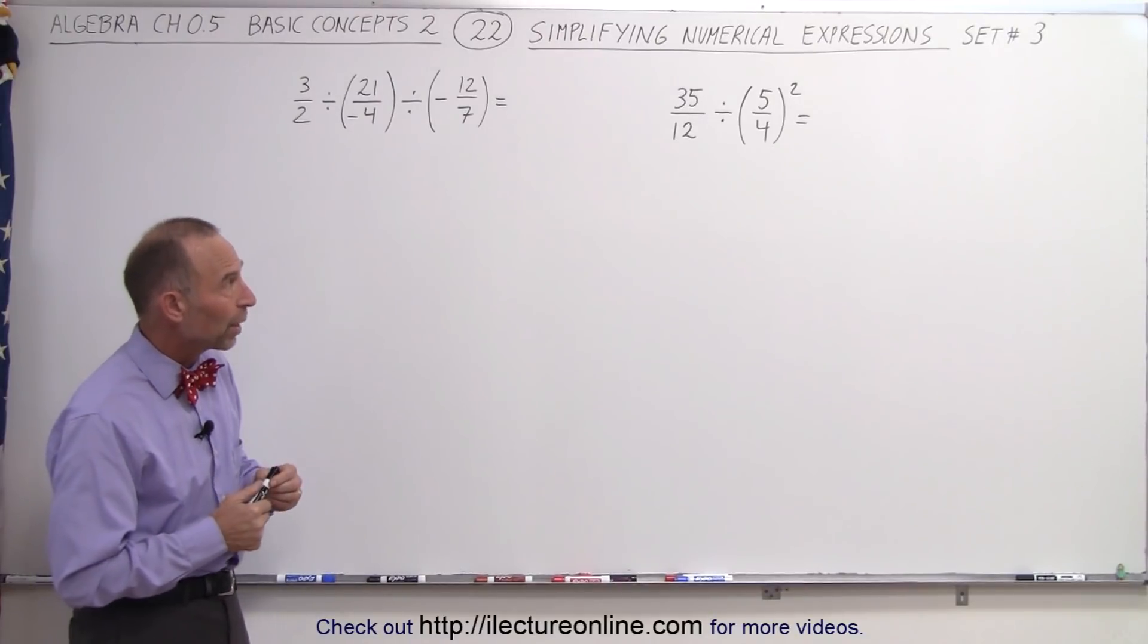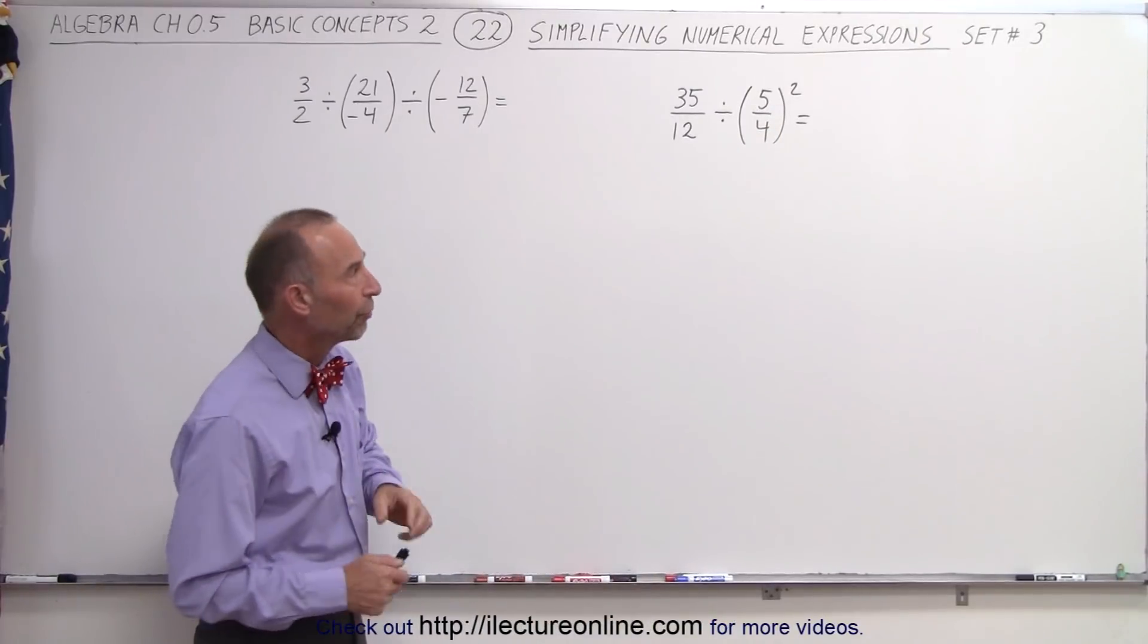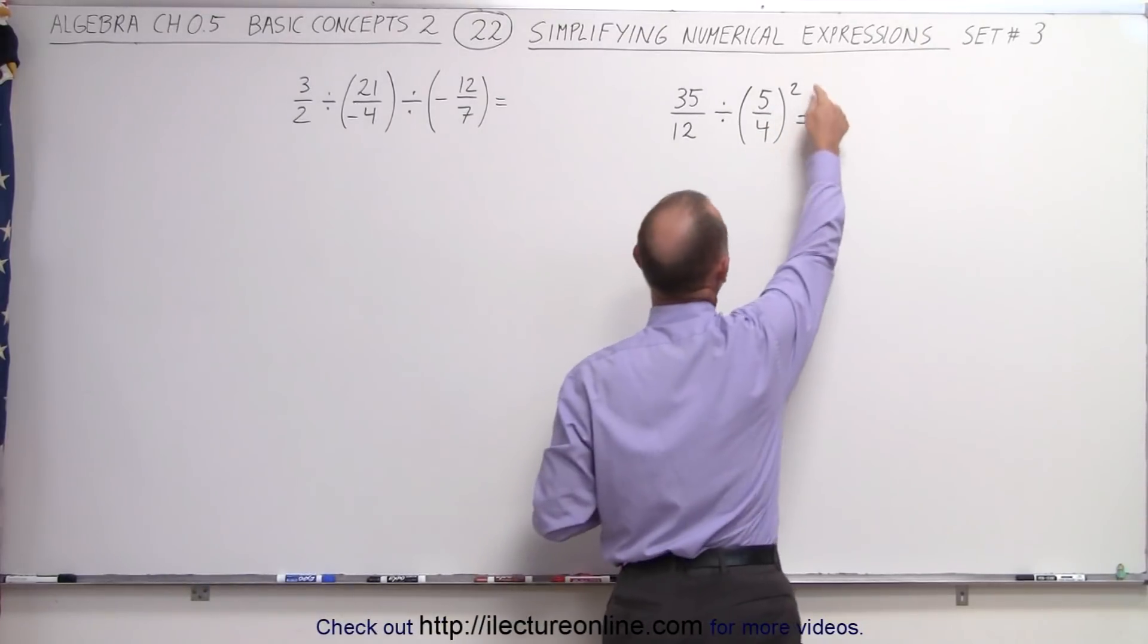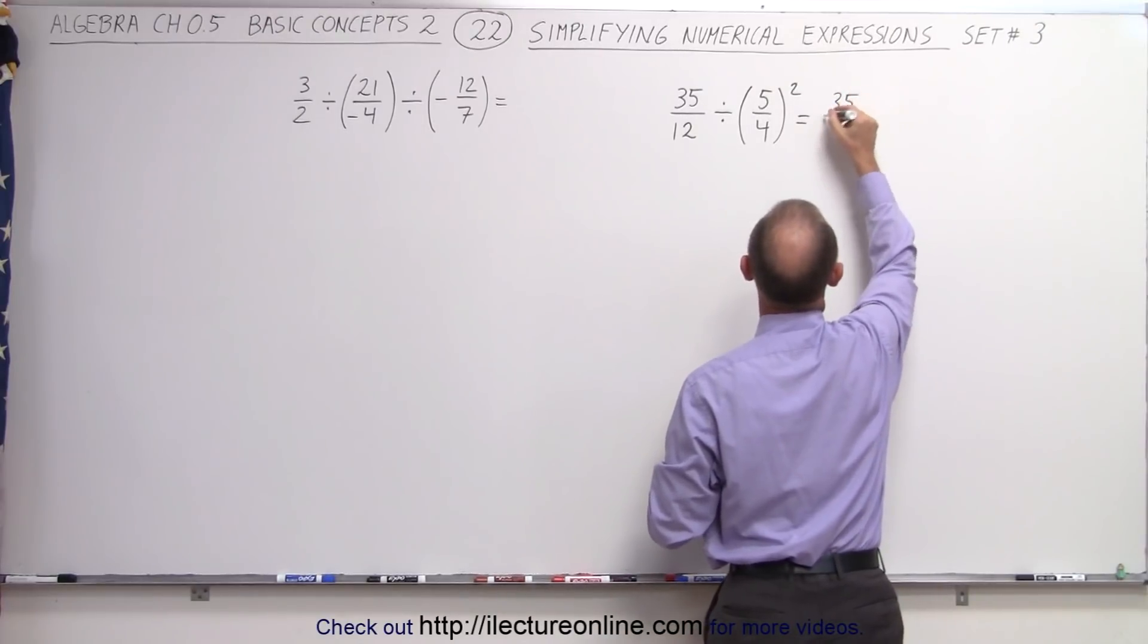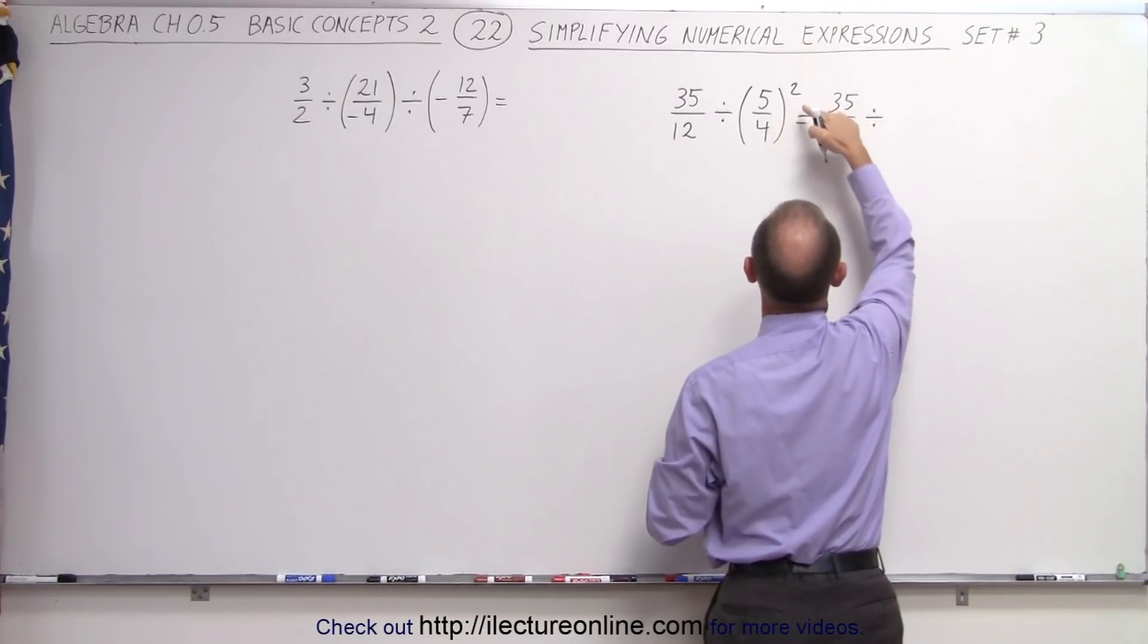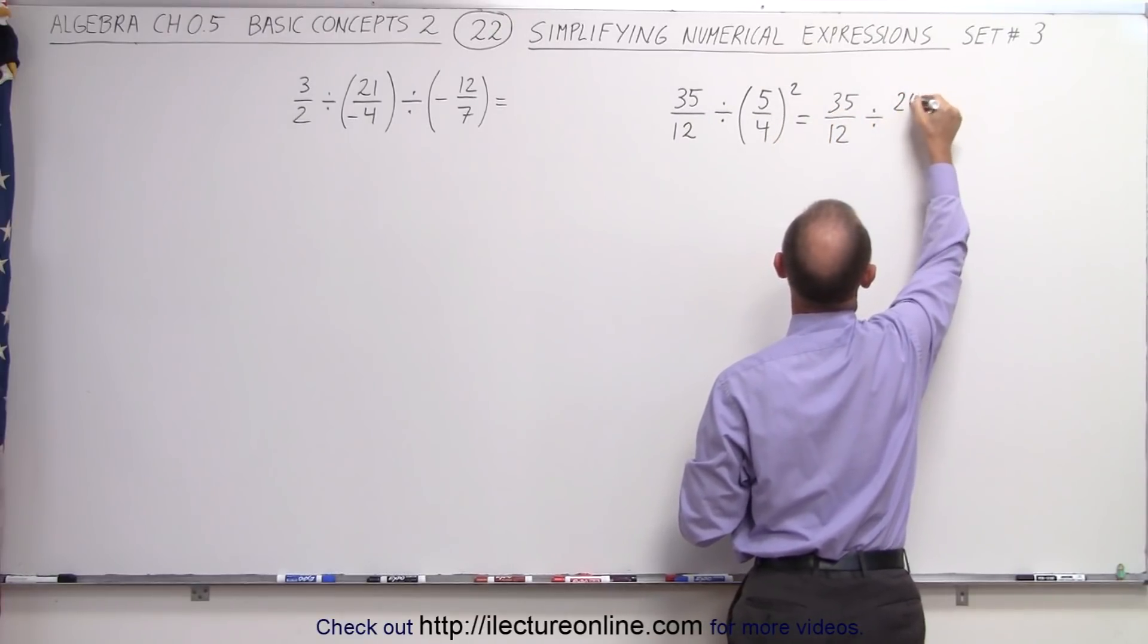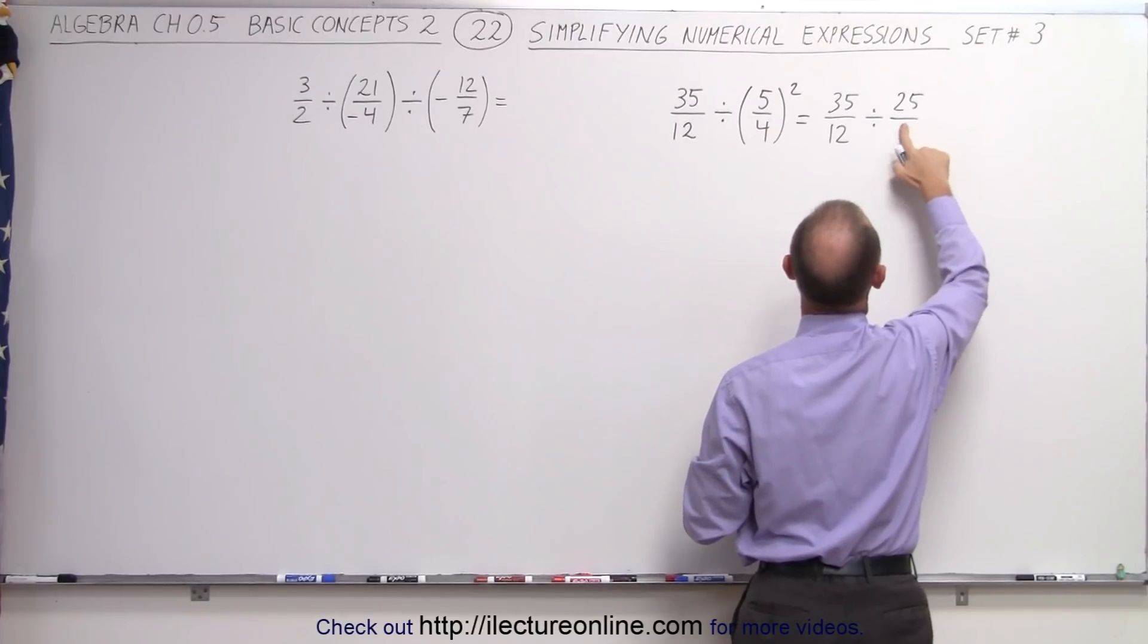Starting with one on the right, notice we have a division and we have an exponent. The rules tell us exponents go first, so let's go ahead and take care of this first. So this becomes equal to 35 divided by 12, divided by, and now we apply the exponent, and this becomes 25 over, not 4, but 4 squared, which is 16.